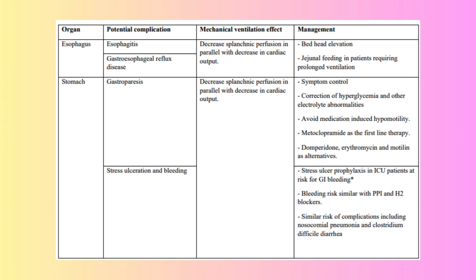Prevalence of GI Complications: 50-80% of critically ill ICU patients, especially those on mechanical ventilation, experience GI complications like bleeding, infection, and motility disorders. These complications are often underdiagnosed but can involve multiple organs — esophagus, stomach, intestines, liver, gallbladder, and pancreas.